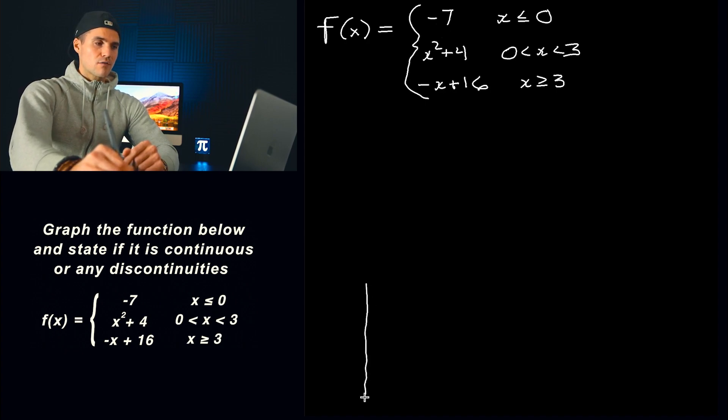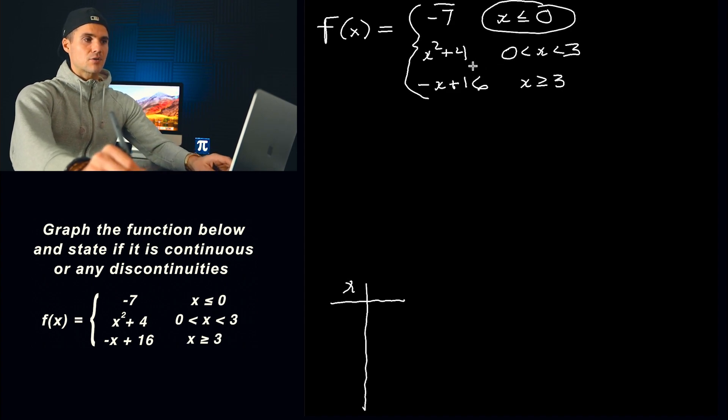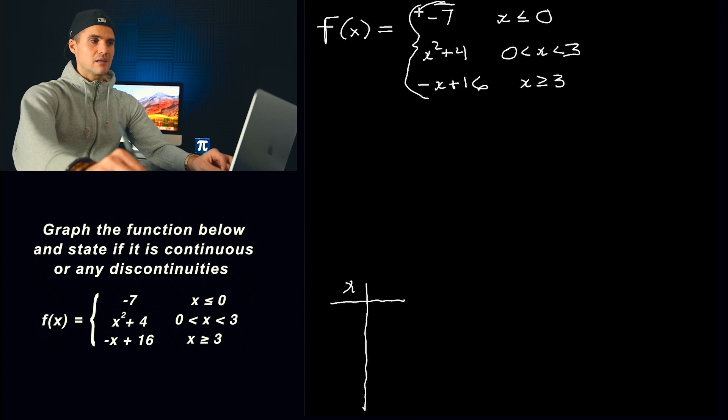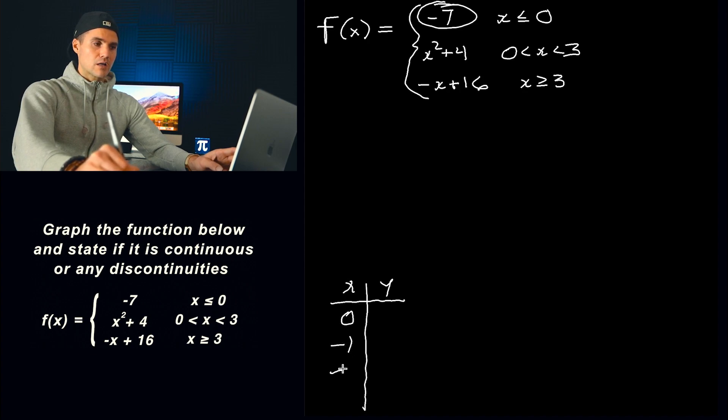So let's start off with this piece here on the left part of the domain. X is less than or equal to zero. So notice that the y values are just going to stay constant at negative seven. And so we know that for x values less than or equal to zero, so like zero, negative one, negative two, negative three, the y value is just going to stay as negative seven like that.